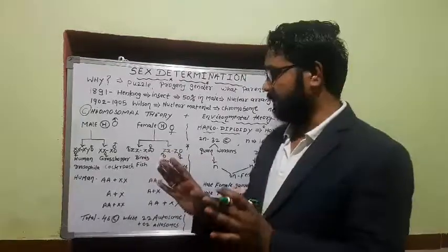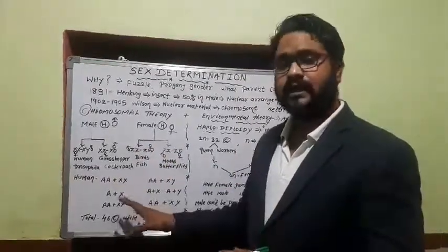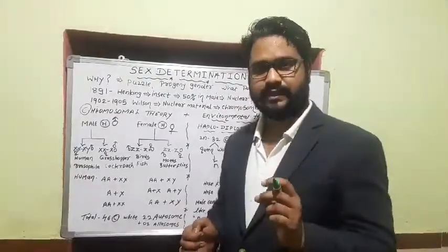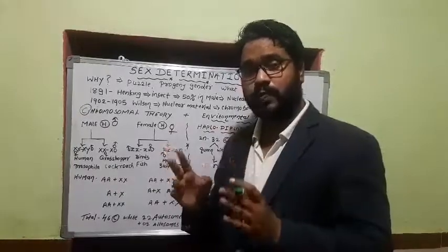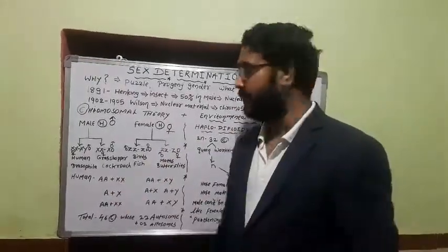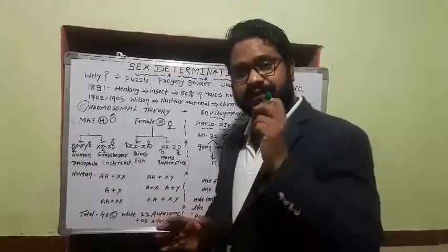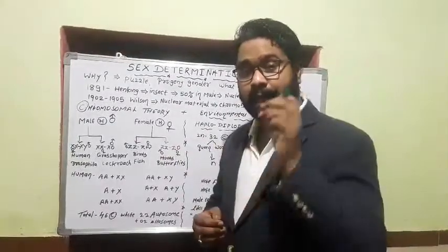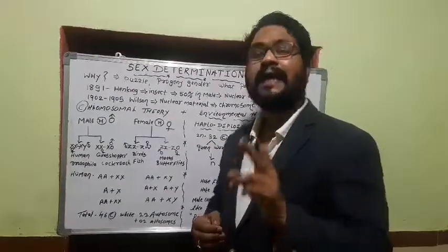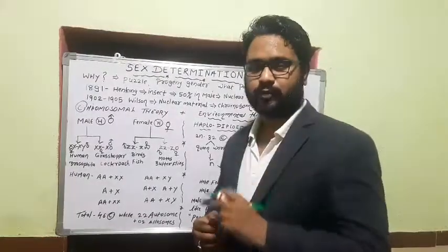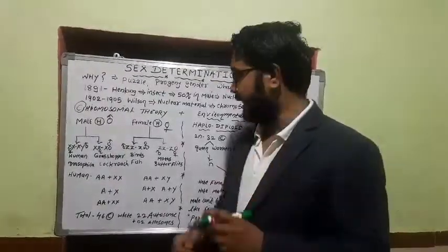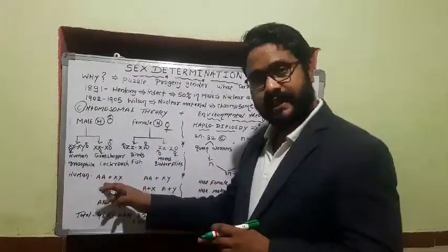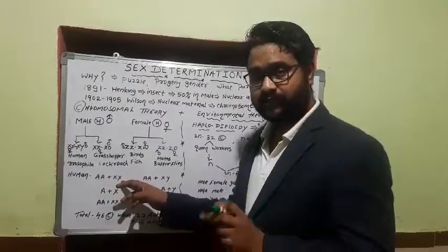In humans, there are 23 pairs of chromosomes — 23 pairs means 46 chromosomes total. Out of these 46 chromosomes, 22 pairs are autosomes that control different body characters. One pair, called allosomes, is the sex chromosome pair. That pair can be XX, making a female, or XY, making a male.